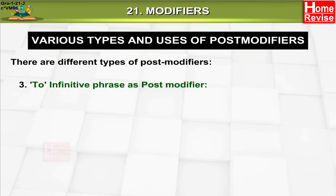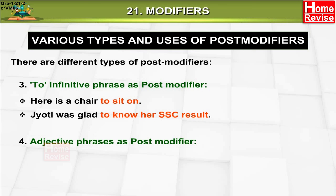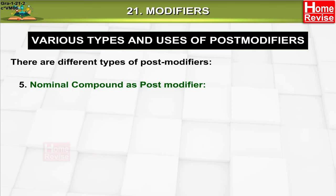Three: infinitive phrase as post-modifier. Example: 'Here is a chair to sit on.' 'Jody was glad to know her SSC result.' Four: adjective phrases as post-modifier. Example: 'Mr. Anil is experienced in teaching English.' 'He is a man of great honor.'